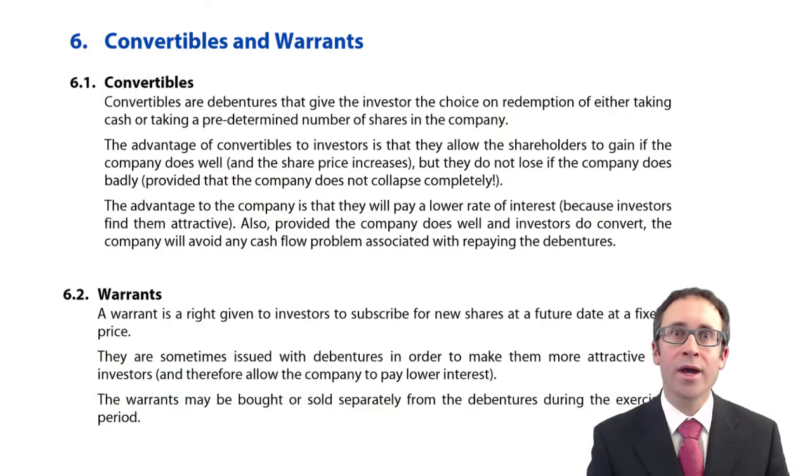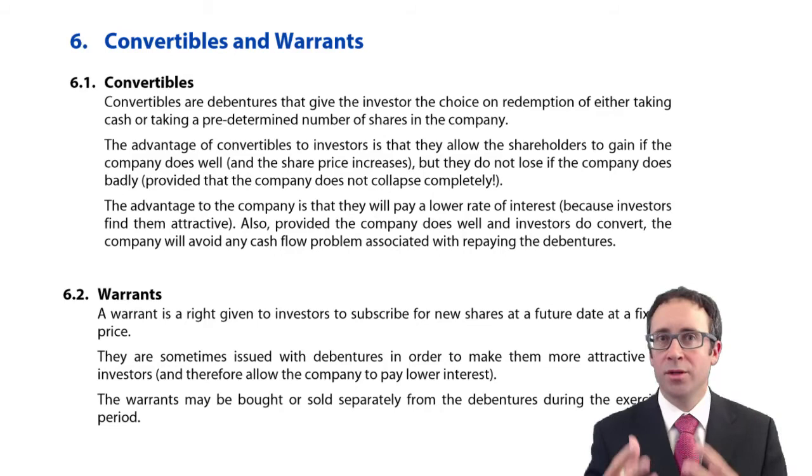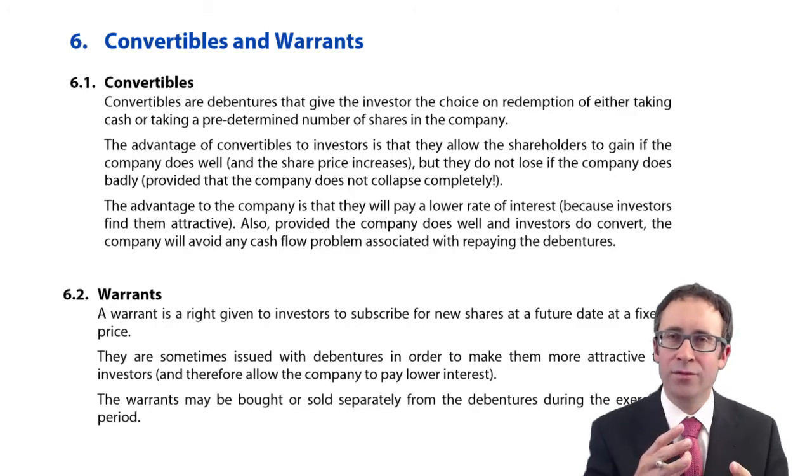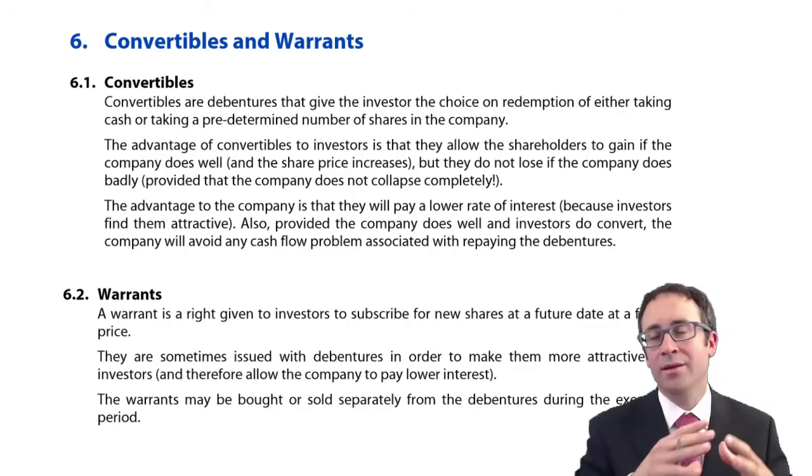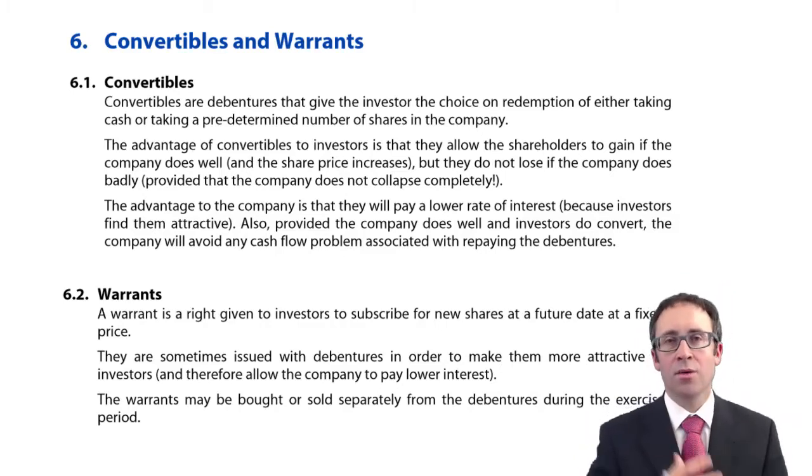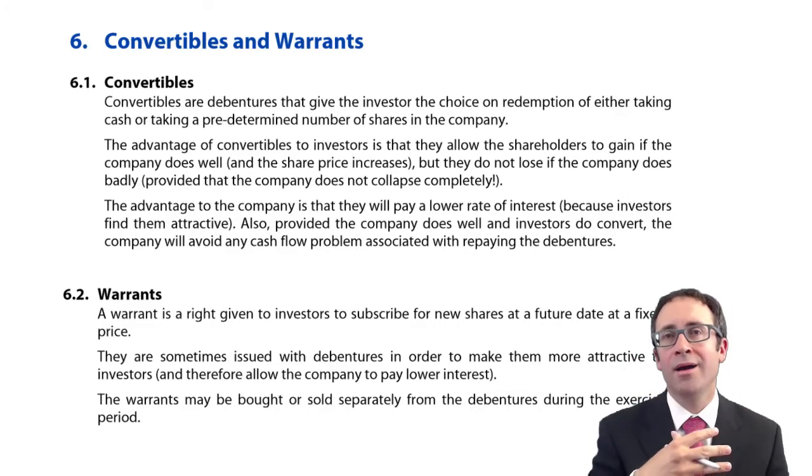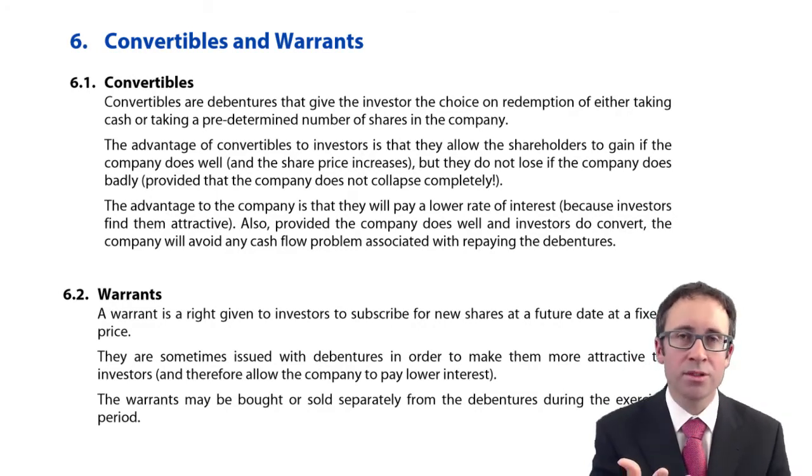We're now going to look at convertibles and warrants, and it's important that you can identify the difference between the two. Because they're similar in nature, but distinct enough to make sure you don't make mistakes. So a convertible is a debenture, but a special type of debenture, whereby you still pay interest on the debenture once it's been issued.